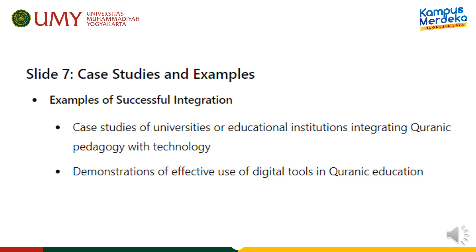This university also emphasizes traditional values. Despite being online, IOU maintains a strong emphasis on traditional Quranic values, ensuring that all teachings are in line with authentic Islamic scholarship and interpretations. Regarding global accessibility, IOU offers courses online, allowing it to reach a global audience of students who may not have access to traditional Quranic education locally, thereby increasing accessibility and promoting lifelong learning.